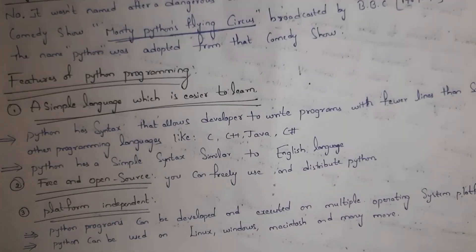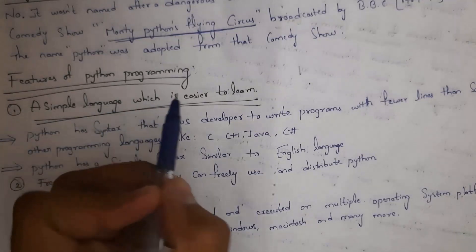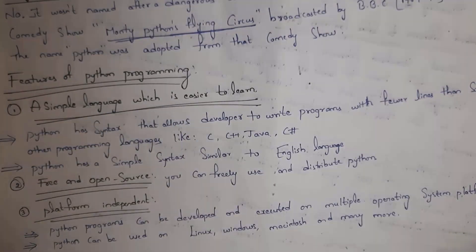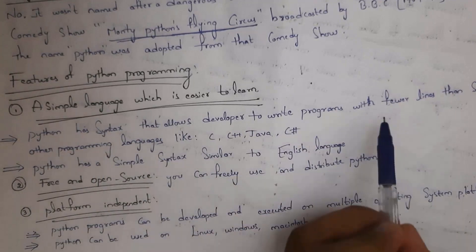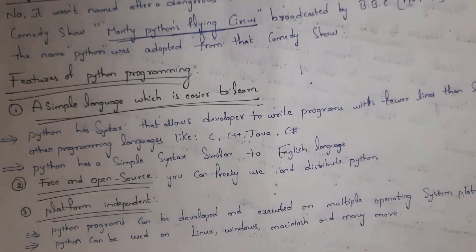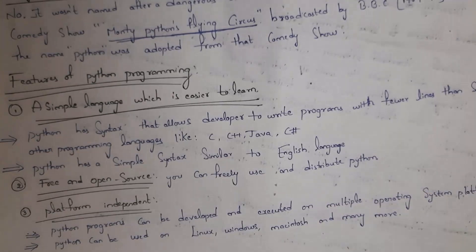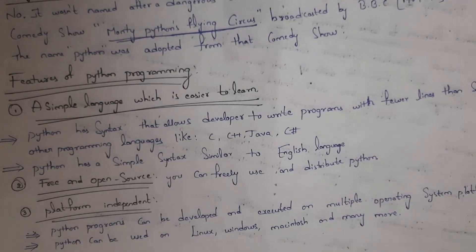Next I will explain the features of Python. The first feature is that it is a simple language, easier to learn. Python has syntax that allows developers to write programs with fewer lines compared to other languages like C, C++, and Java. The syntax is in English-like language, so it is easier to learn.